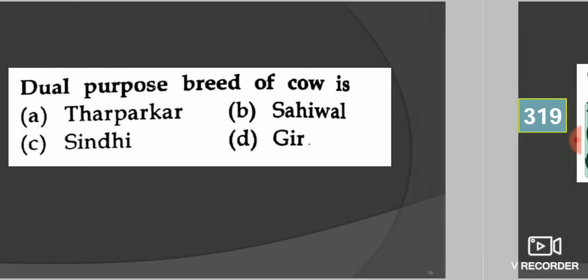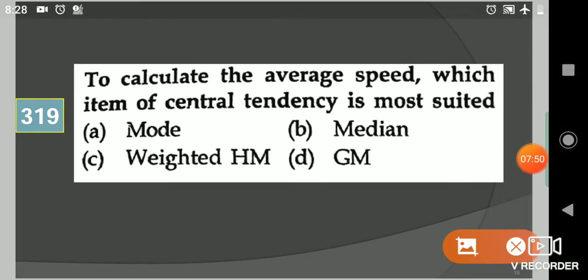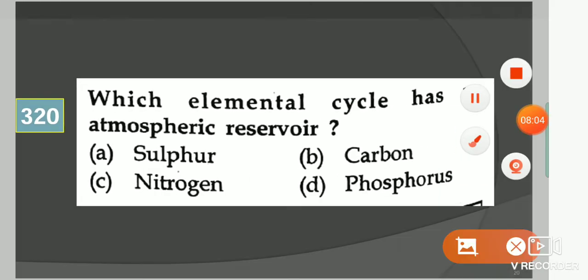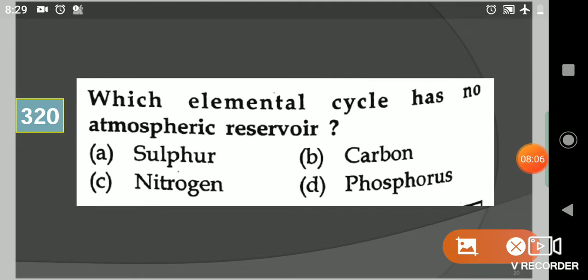Next question: To calculate the average speed, which atom of central tendency is most suited? Your options are mode, median, weighted harmonic mean, or geometric mean. Your answer is third option, weighted harmonic mean. Next question: Which elemental cycle has no atmospheric reservoir? Your options are sulfur, carbon, nitrogen, phosphorus. Your answer is phosphorus.